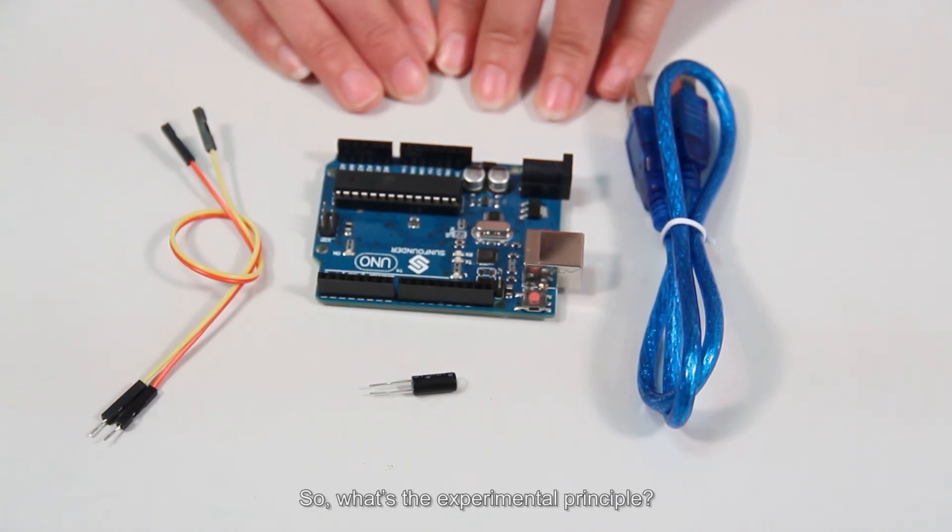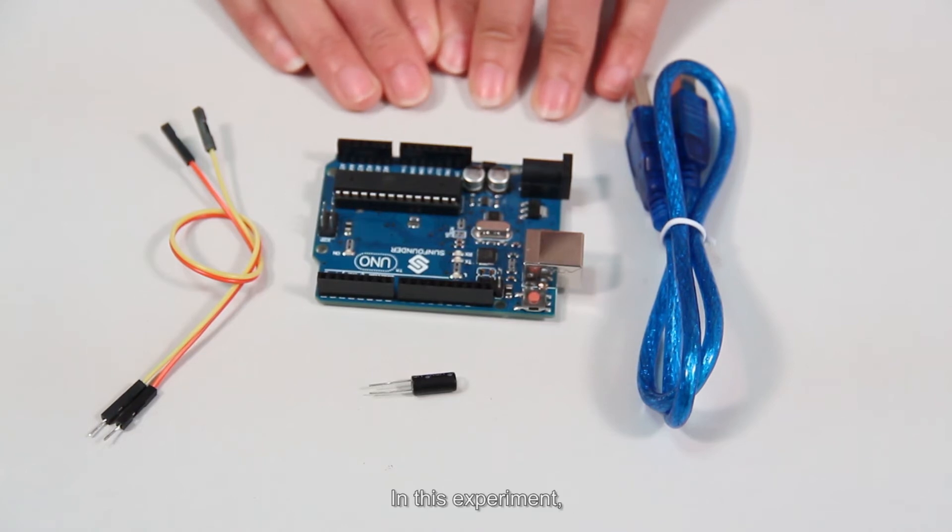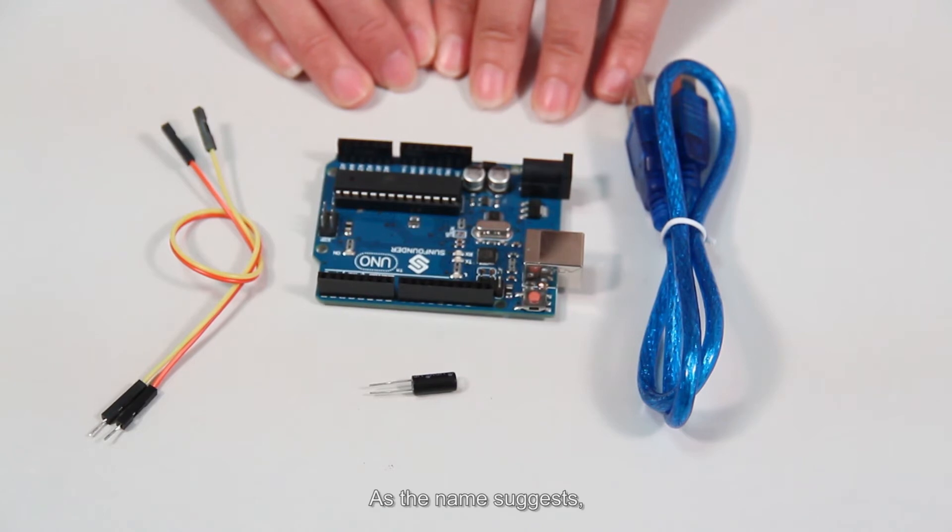What's the experimental principle? In this experiment, we use a rolling board tilt switch. As the name suggests, it has a metal board inside.